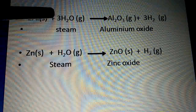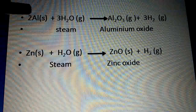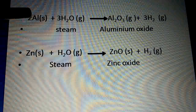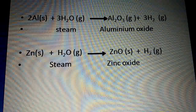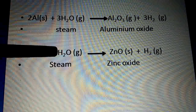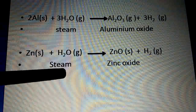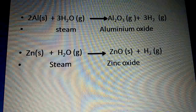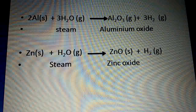Similarly, aluminum reacted with steam gives aluminum oxide (Al₂O₃) plus hydrogen gas — not aluminum hydroxide. And zinc reacted with steam: Zn + H₂O → ZnO + H₂ (zinc oxide). When metals react with steam, metal oxide is formed.